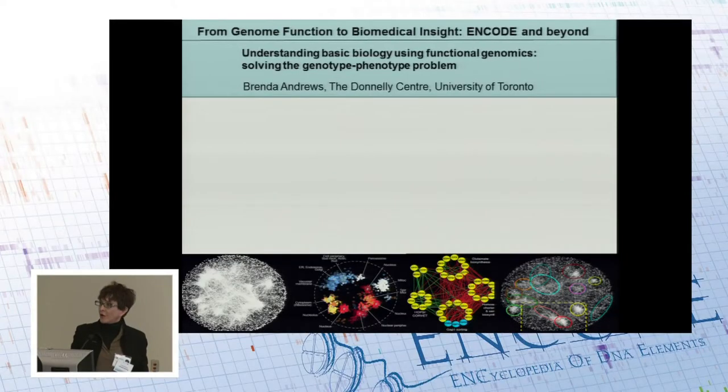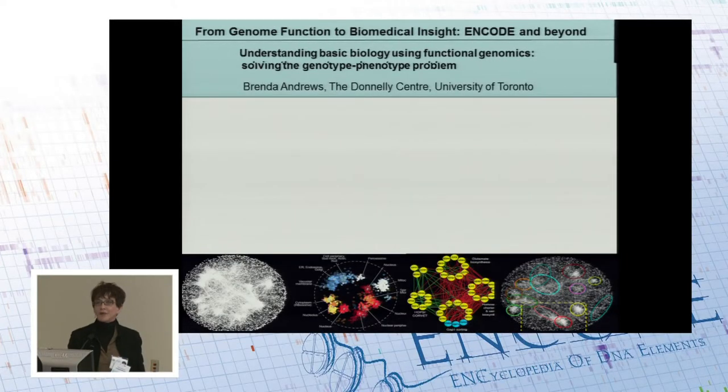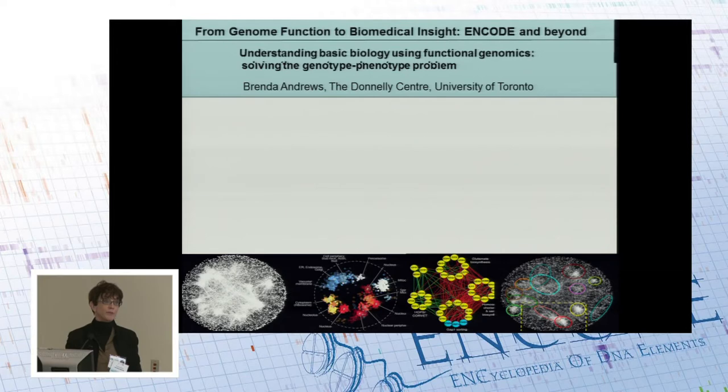I'll start by telling you about a project that we've been doing in the model system, the budding yeast system, that looks at systematic combinatorial genetic perturbations to make genetic networks. That will set the stage for a discussion of how these types of projects might be implemented in mammalian cells and why that might be important.